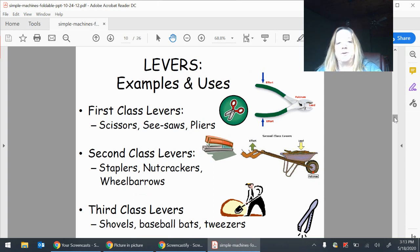Here are some examples of levers. We have first class levers, which are the scissors, seesaws, and pliers. We have those second class levers, which are staplers, nutcrackers, and wheelbarrows. And then we have those third class levers, which are shovels, baseball bats, and tweezers.